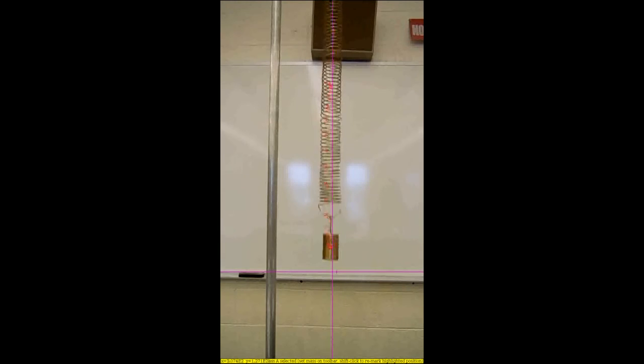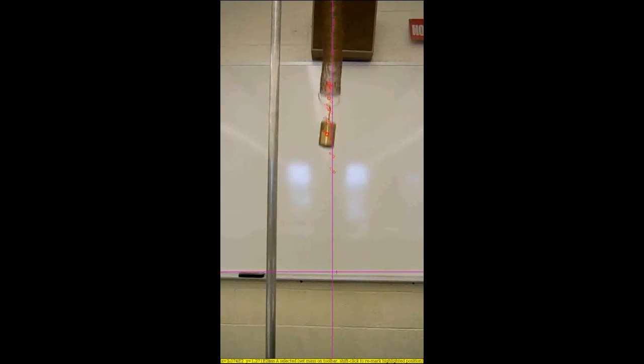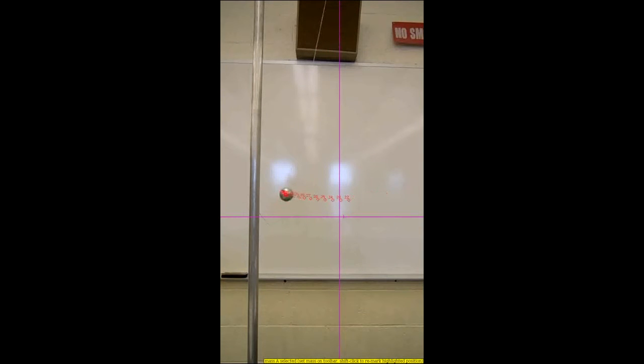Here are some examples of repeating processes that we call oscillations. The granddaddy of them all — the one we use to understand all the others — is the mass on a spring. Here's a mass on a spring; we'll spend a lot of time talking about it. Another common example is a pendulum swinging back and forth, and if you look between the pendulum and the mass on the spring, you'll notice some very striking similarities between their motions.